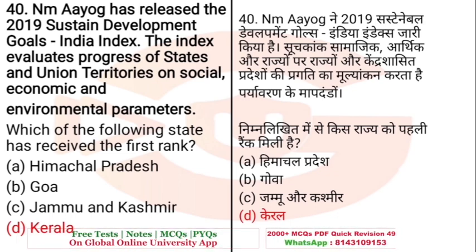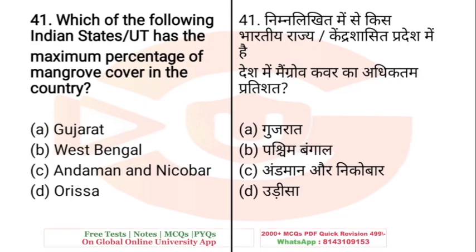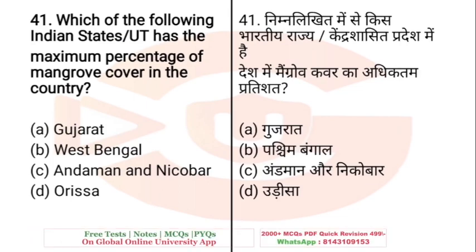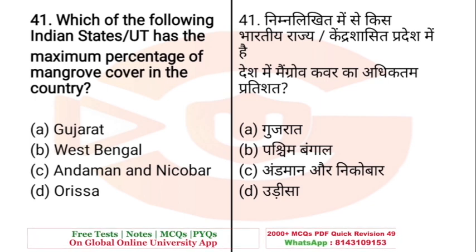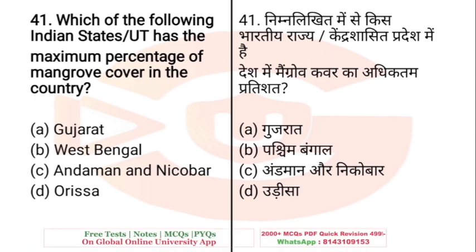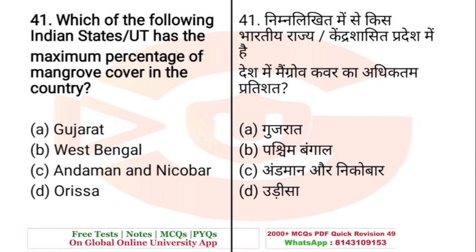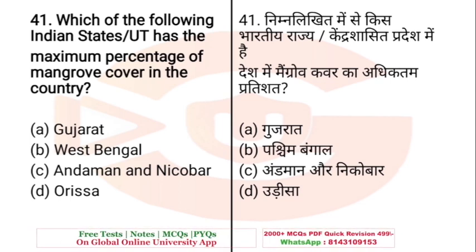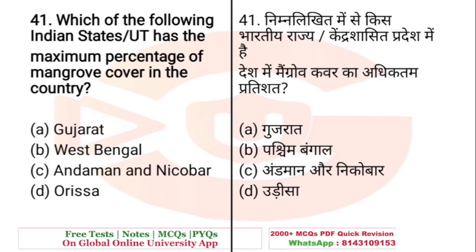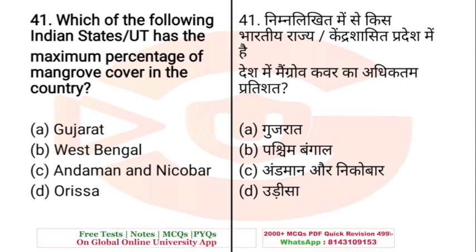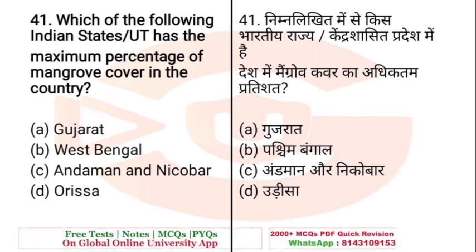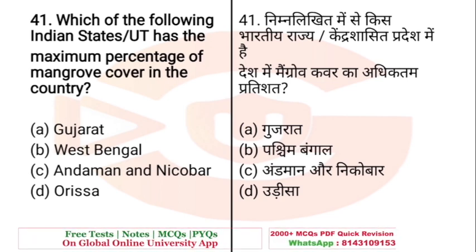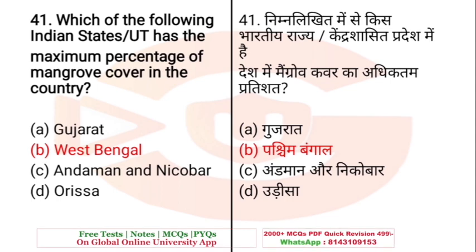Question: Which of the following Indian states or union territories has the maximum percentage of mangrove cover in the country? A. Gujarat, B. West Bengal, C. Andaman and Nicobar, D. Odisha. The right answer is West Bengal.